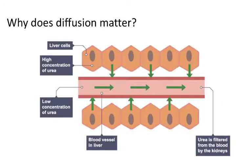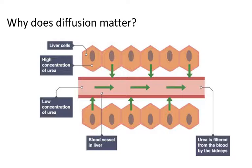So why do we care about diffusion? Well, your liver is your main detox organ, and it creates a molecule called urea, which is primarily considered waste. Urea diffuses from the high concentration within the liver cells to the much lower concentration in the blood. From there, the urea is again filtered out based on concentration in the kidneys. When that process doesn't work, you're essentially stewing in your own poison.